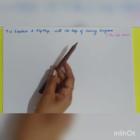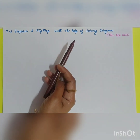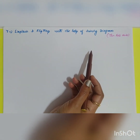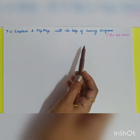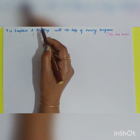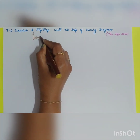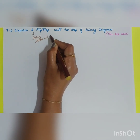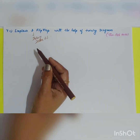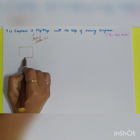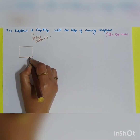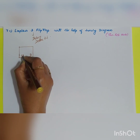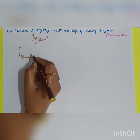The next question is: explain D flip-flop with the help of a timing diagram (January/February 2021). The D flip-flop is also called a delay flip-flop or data flip-flop. The block diagram of a D flip-flop consists of one input, that is D, and a second input which is the clock signal.